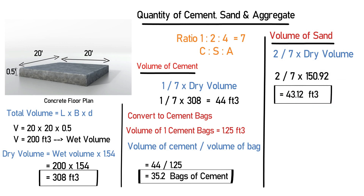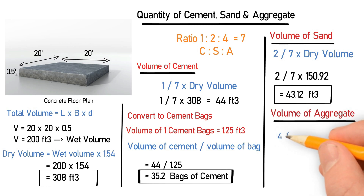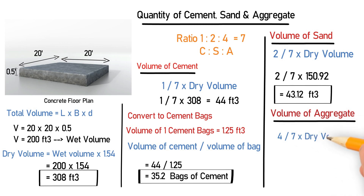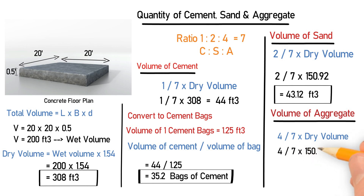Now let's find out the volume of aggregate. Aggregate has a ratio of 4, so the formula is (4 ÷ 7) × dry volume = (4 ÷ 7) × 308 = 176 cubic feet. This gives us 176 cubic feet of aggregate required.